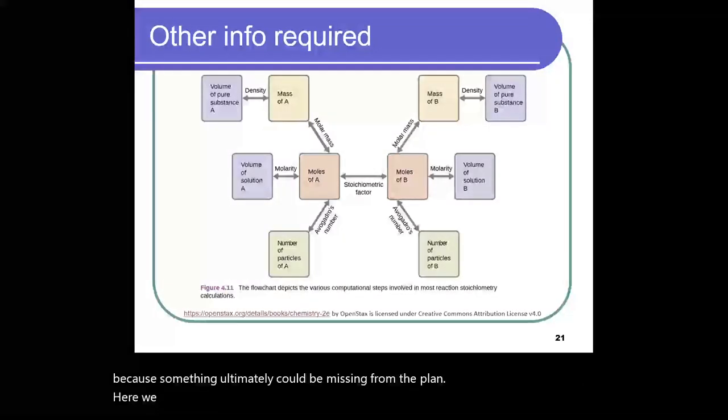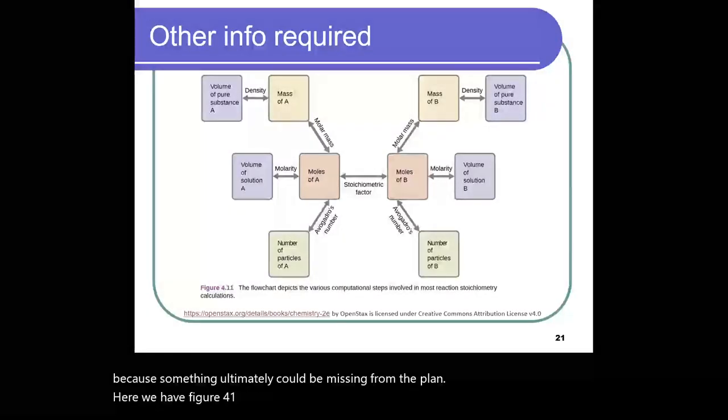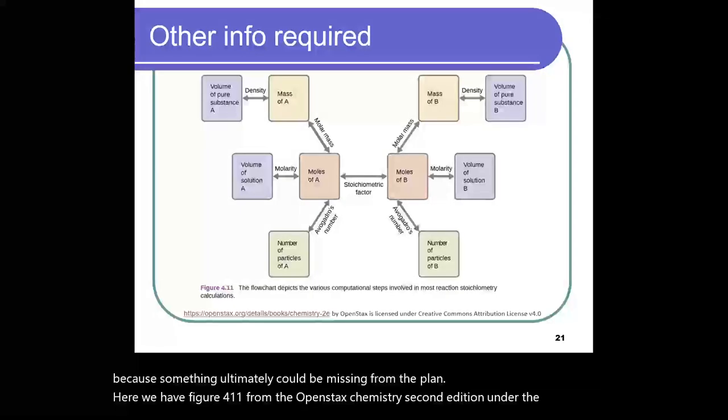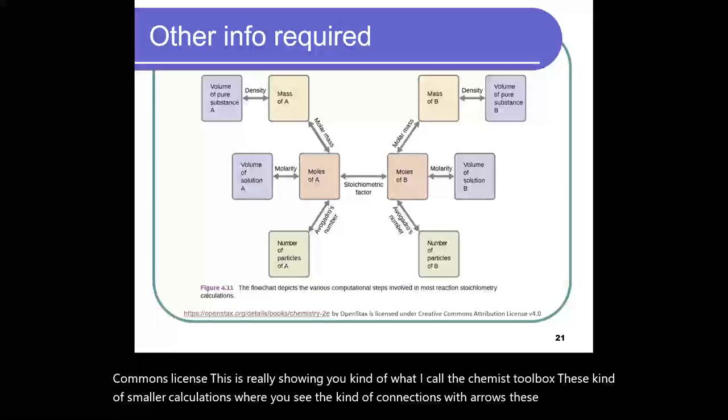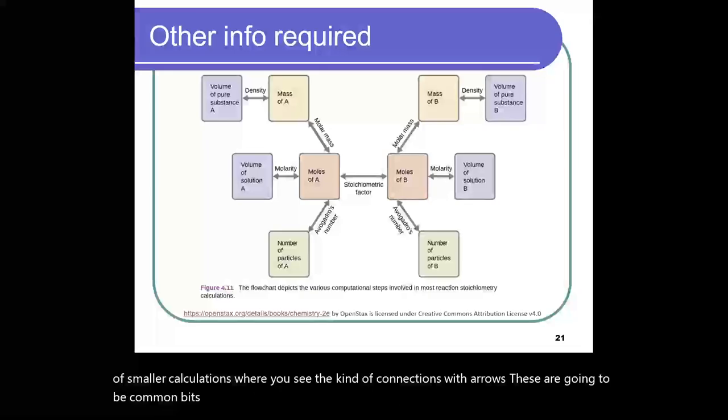Here we have figure 4.11 from the OpenStacks Chemistry second edition under the Creative Commons license. This is really showing you kind of what I call the chemist toolbox. These kind of smaller calculations where you see the kind of connections with arrows, these are going to be common bits and pieces either at the beginning or the end of a lot of problem solving.